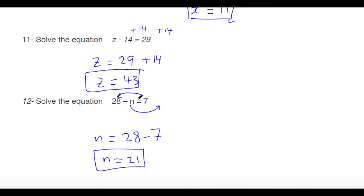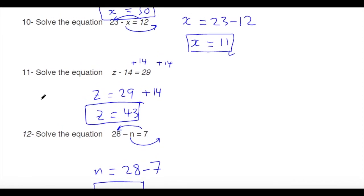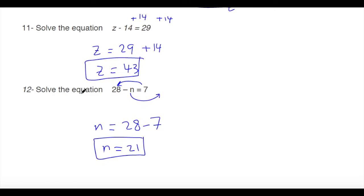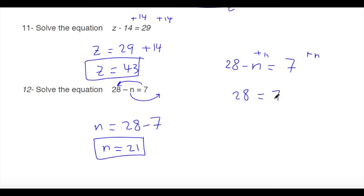Note: for questions where the variable appears after a subtraction, you can simply replace the variable with the other side. For example, 28 minus n equals 7 — adding n to both sides gives 28 minus 7 equals n, which is exactly what we did before.